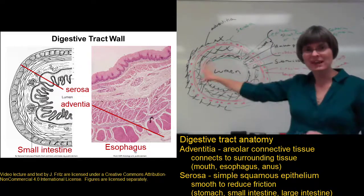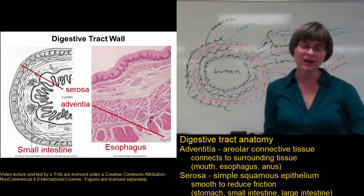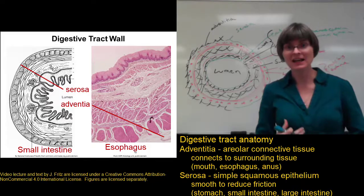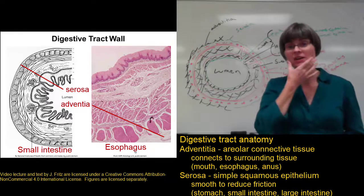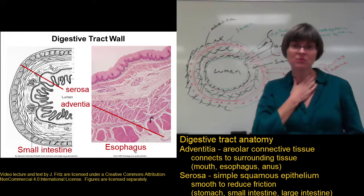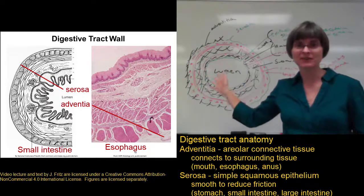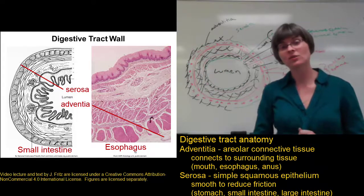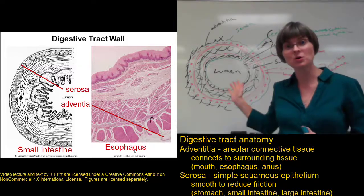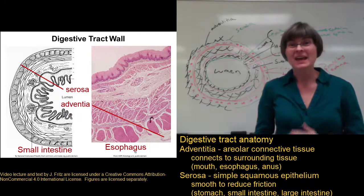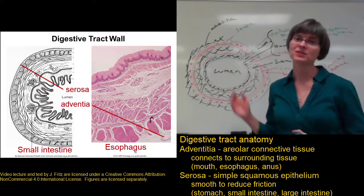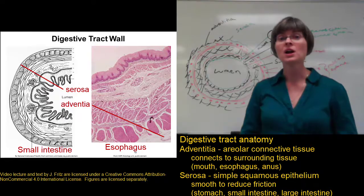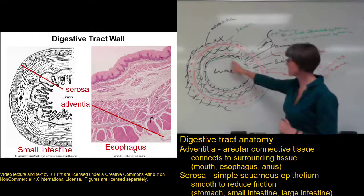Even though I've drawn both the adventitia and the serosa on this drawing, you don't have both layers on any specific organ. In the mouth, esophagus, or rectum, you would have only adventitia all the way around. In the stomach, small intestine, or large intestine, it would just be serosa all the way around. If I asked you to do a drawing like this, you'll need to pay attention to which organ I tell you I'm looking at, so you know what sort of epithelium to include and whether you should have an adventitia or a serosa.